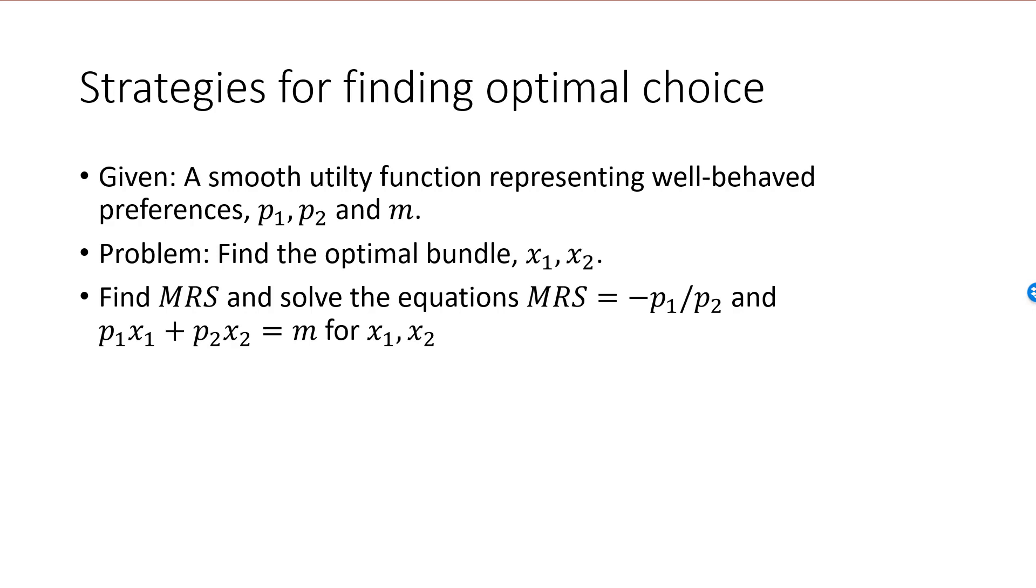Create your first equation by setting MRS equal to minus P1 over P2. Your second equation is the equation of the budget line. P1 x1 plus P2 x2 must be equal to M. Now we have two equations in two unknowns, and we need to solve this system. With well-behaved preferences, there can be at most one solution. If your system of equations does not have a solution, then the optimal bundle is a boundary bundle.